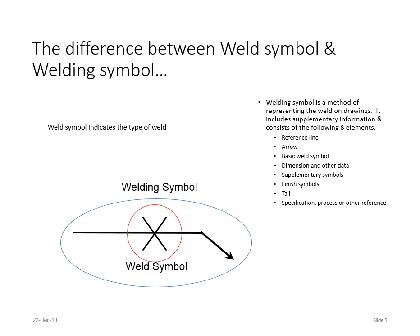Is it a slot weld, plug weld, fillet weld, groove weld, any or all of the above combined? That is the weld symbol. The welding symbol is all the other information: do we need to grind it, is there a specification, what process, what dimensions, how big does the weld need to be? I hope that clears up the distinction between weld symbol and welding symbol, starting from a good foundation.